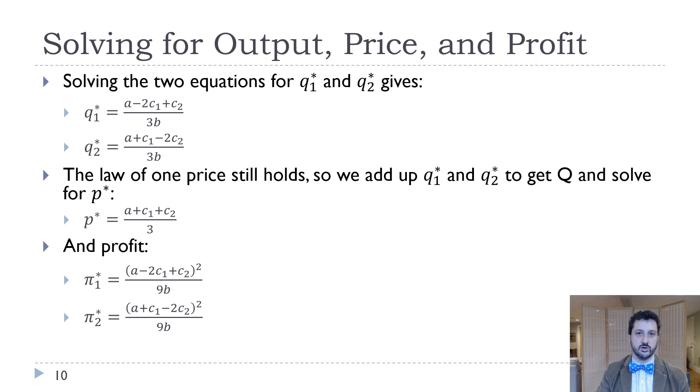Basically, you just have to solve the equation in terms of one of them, plug it back into the other. Then you get one equation and one unknown and solve for it. This is the result. So Q1 star is A minus 2C1 plus C2 over 3B. Q2 star equals A plus C1 minus 2C2 over 3B. And then our price is A plus C1 plus C2 over 3. Now, notice that if we just say, okay, now C1 and C2 are the same and they're just equal to C, we go back to what we just solved for. And that's always nice. Gives us a little more confidence in our models.